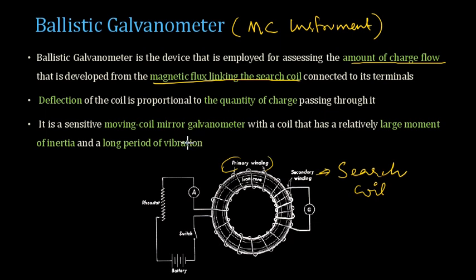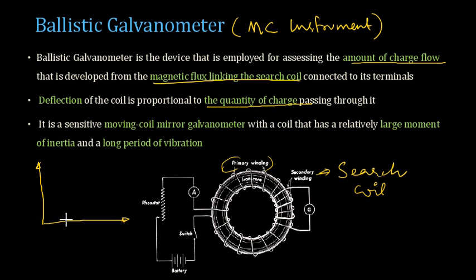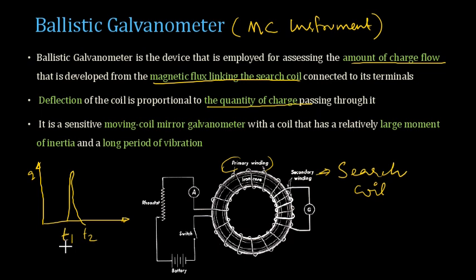In this ballistic galvanometer, the deflection is proportional to the quantity of charge passing through it. One important aspect is that it is used to identify the impulsive nature of current or charge flowing through it — that is, a charge flowing for a small duration from T1 to T2. Once you integrate this charge over that duration you get a finite value of charge flowing through the galvanometer for a very small duration of time.